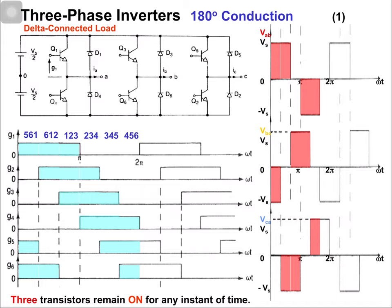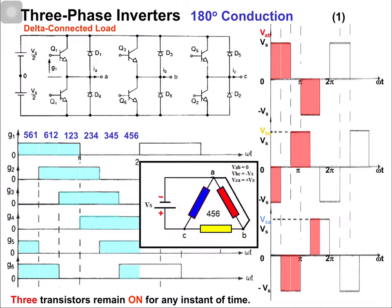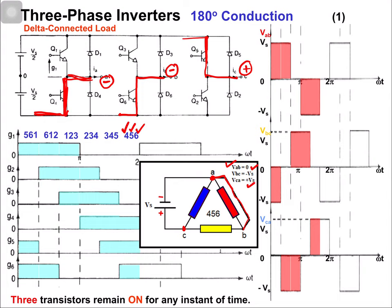The last switching state is 4, 5, 6. Because of switch 4, phase A is connected with the negative terminal. Because of switch 5, phase C is connected with the positive terminal. Because of switch 6, phase B is connected with the negative terminal. The equivalent circuit shows: phase A negative, phase C positive, and phase B negative. Therefore, vab = 0, vbc = -Vs, and vca = +Vs.